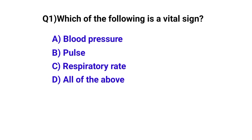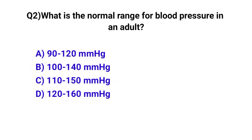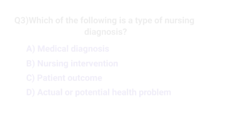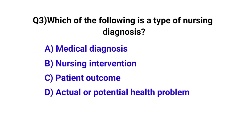Question number one: which of the following is a vital sign? The correct option is D, all of the above. Question number two: what is the normal range for blood pressure in adults? The correct option is A, 120 mmHg.